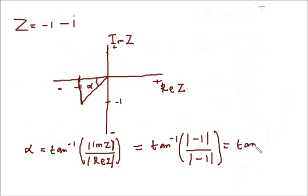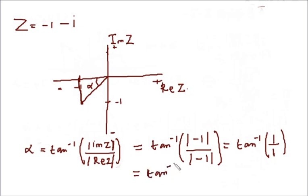This is equal to tan inverse of 1 over 1. The tan inverse of 1 is 45 degrees. So we know that the angle between here and here is 45 degrees.